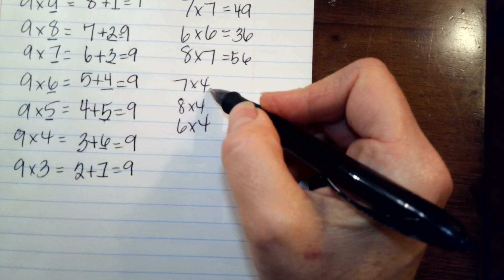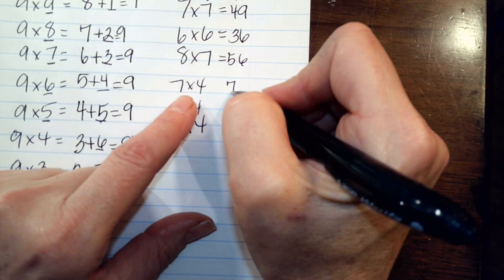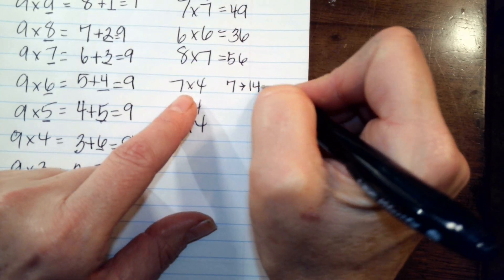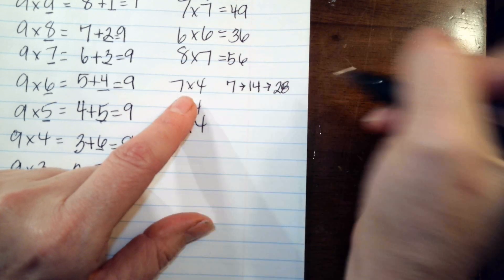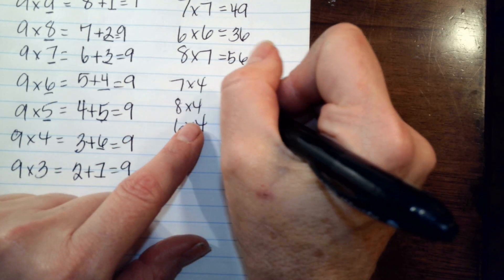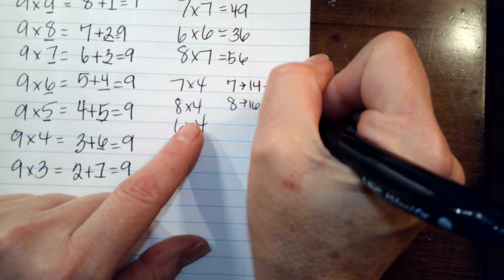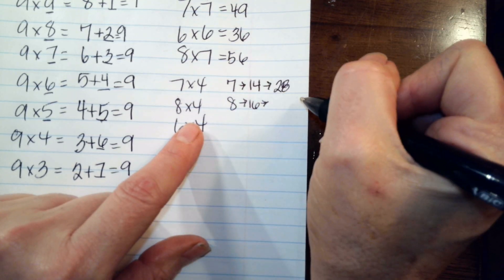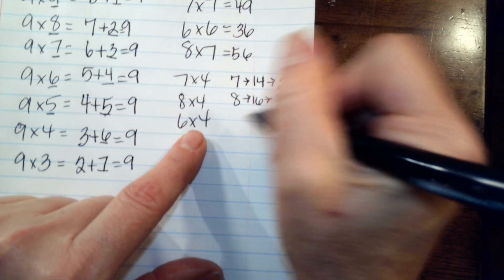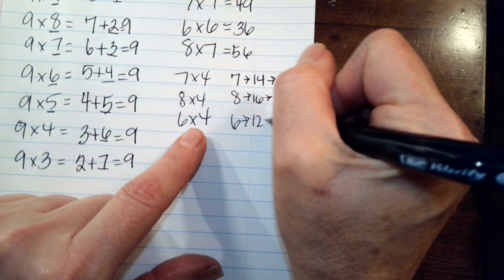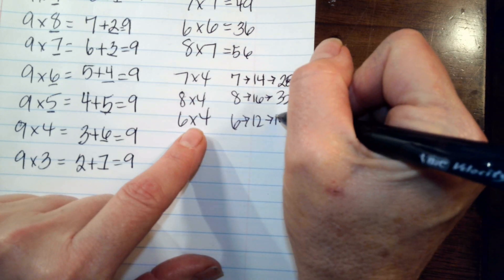The times four strategy is you take seven and you double it, and then you double it again. So seven doubled is fourteen, fourteen doubled is twenty-eight. Eight doubled is sixteen, and then sixteen doubled is like sixteen plus sixteen, thirty-two. Six doubled is twelve, twelve doubled is twenty-four.